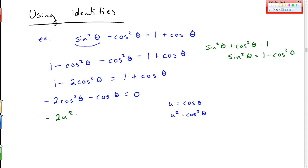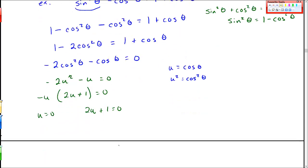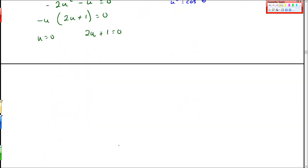So I'll put that in: negative 2u squared minus u equals 0. And let me factor out negative u: negative u times 2u plus 1 equals 0. So I get u is 0 or 2u plus 1 is 0. So u is negative 1 half or 0.